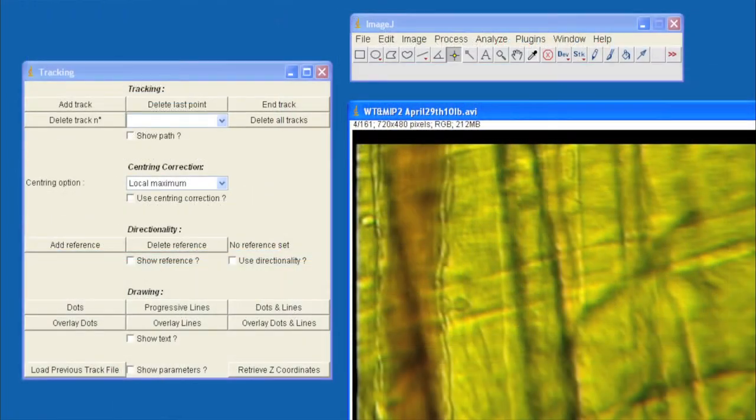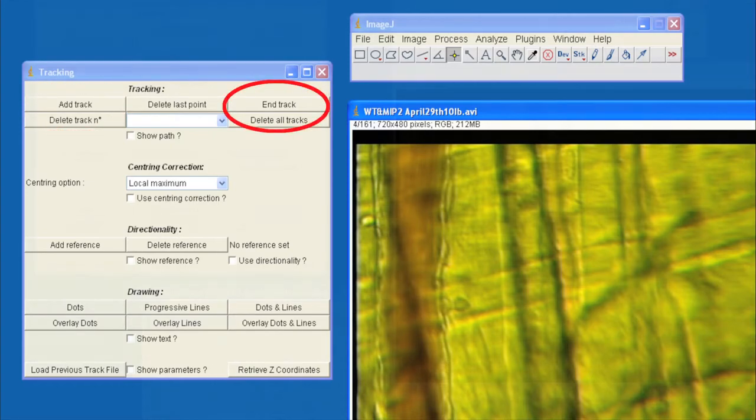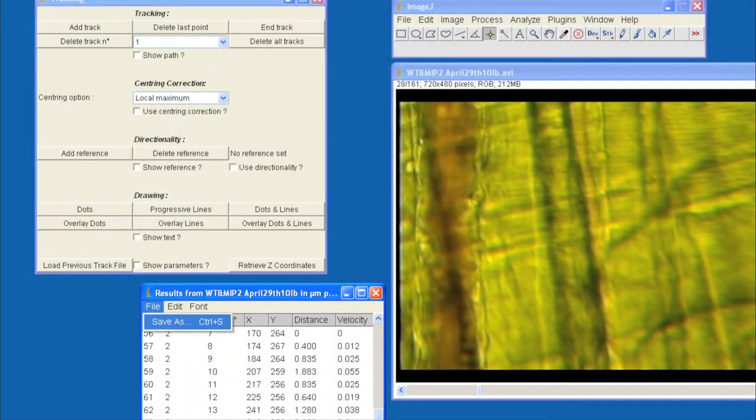Track crawling and migrating neutrophils one by one. Click Add Track to track the cell from its appearance in the tissue to its disappearance in each frame, then click End Track to finish and save the results in Microsoft Excel.